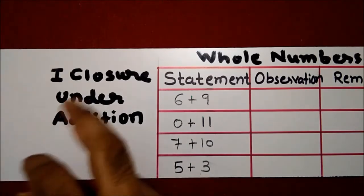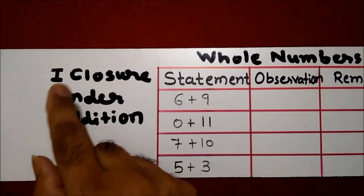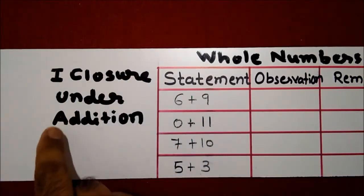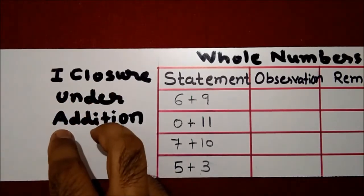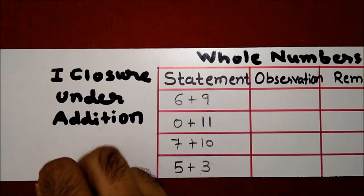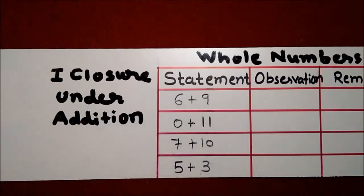So very first property is closure property under addition. This property is, let's understand the meaning first.